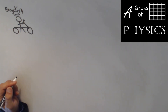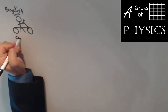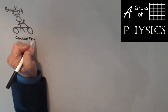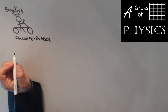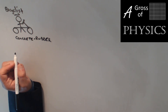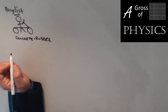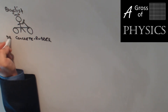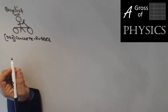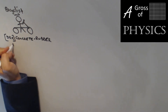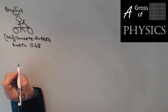Our next problem involves a bicyclist traveling forward on flat concrete sidewalks, so the surface combination is concrete versus rubber. The problem mentions nothing about wet conditions, so we assume dry. Looking at rubber on concrete dry on the reference table, since the bicyclist is moving we are dealing with kinetic friction, and the coefficient is 0.68.